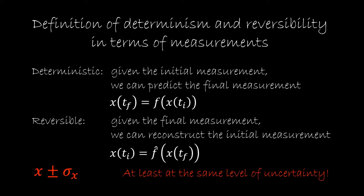A measurement is composed of two things: it's composed of a value, but also of the uncertainty. Imagine that we can predict the future value of a system, but only at an uncertainty that is one million times bigger than the original uncertainty. Well, that prediction wouldn't tell us much. And the same thing applies to reversibility — if we can reconstruct the initial value but only with an uncertainty a million times bigger, again, it wouldn't tell us much.